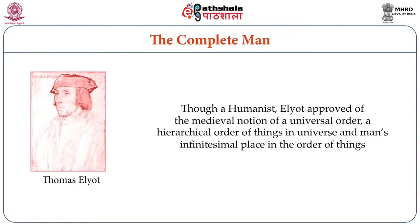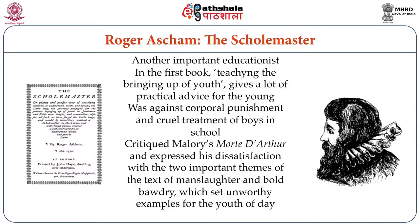Because only by showing the ill effects of evil could the young mind learn to inculcate ideas of goodness. Elyot, though a humanist, approved of the medieval notion of a universal order. He believed in the hierarchical order of things in the universe and man's infinitesimal place in the order of those things.